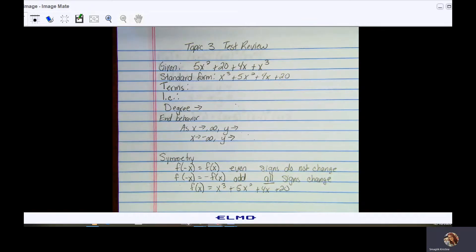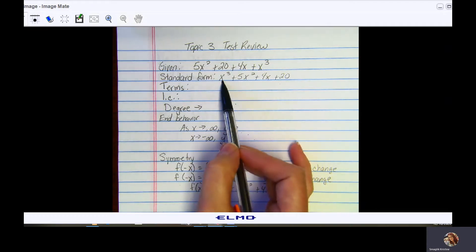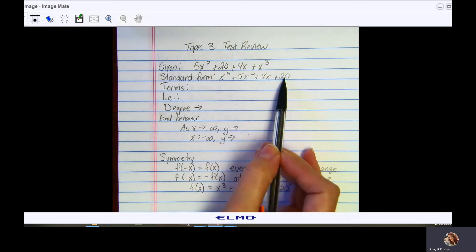Terms are separated by either a plus or a minus, so when I look at this polynomial I have 1, 2, 3, 4 terms.